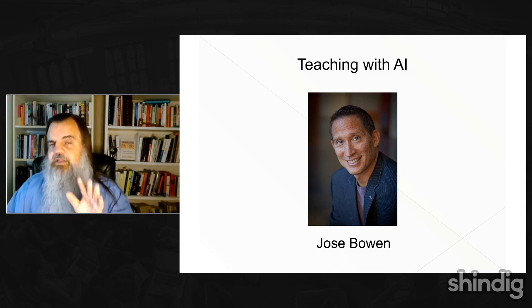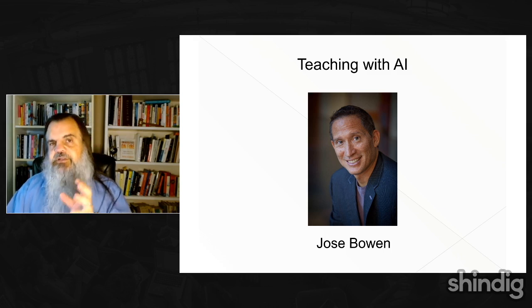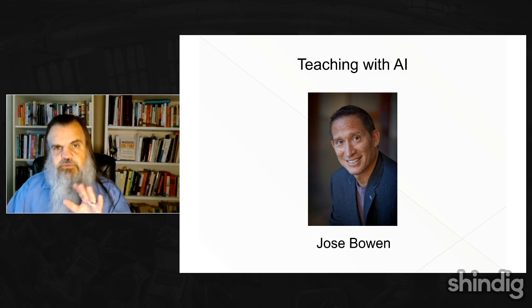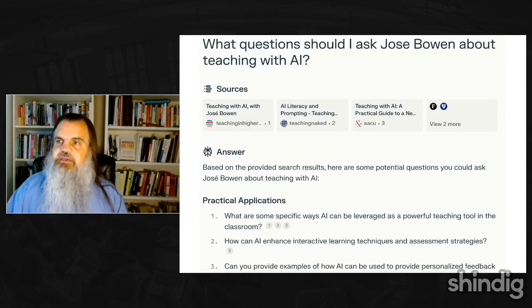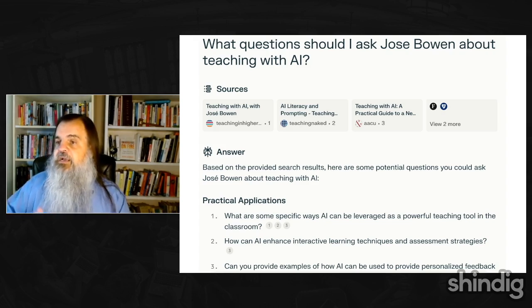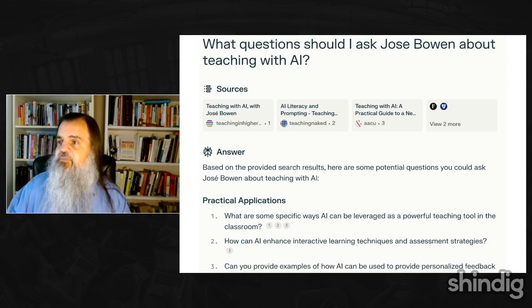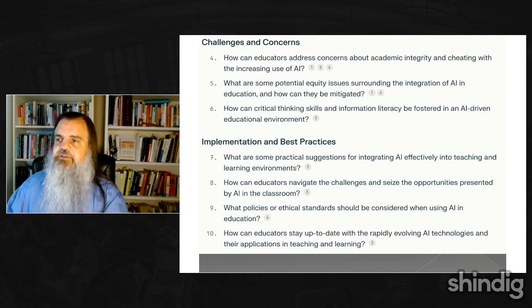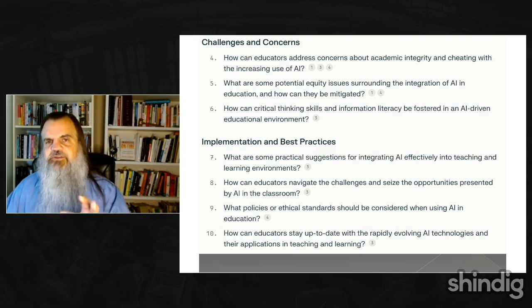Before I bring him up on stage, I did a little research today to prepare. I went to several different AI programs and asked them how best I could interview Jose. I went through Gemini and ChatGPT, but none were quite as good as Perplexity. Perplexity gave a really interesting set of questions with sources, including interviews with Jose. It asked about practical applications, implementation and best practices, academic integrity concerns, critical thinking, information literacy, and practical suggestions for integrating AI effectively.